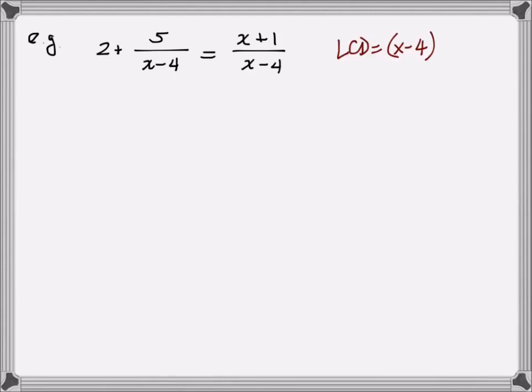Here I've got the LCD to be x minus 4, so I'm going to multiply every single term by the LCD. It gives me 2 times the LCD, which is x minus 4, plus the 5 times the LCD. That x minus 4 cancels out with this x minus 4 in the denominator, so I simply just have a plus 5. On the right-hand side, if I multiply this by x minus 4, it will also cancel out with the denominator, so I just have x plus 1 left.